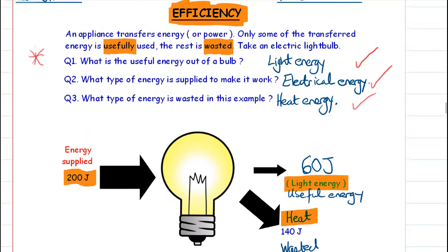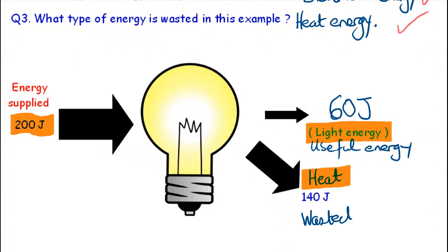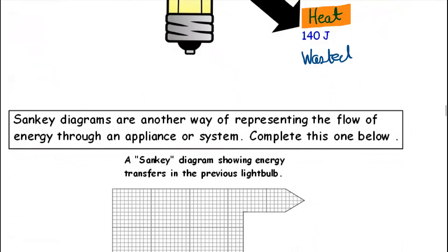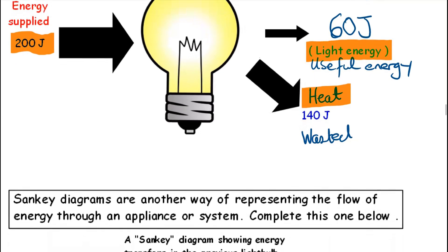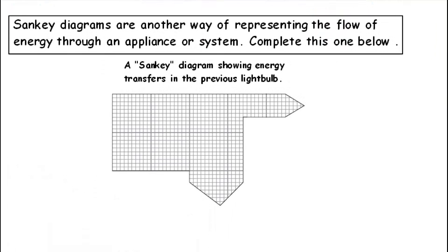Next, we're going to learn how we can represent that flow of energy using what we call a Sankey diagram. Again, you would have met this at Key Stage 3. Complete the one below — Mr. Reddy has represented the different ratios of energy change for you, but you need to label the Sankey diagram based upon the energy supply, the useful energy, and the wasted energy. Before you do that, we're going to watch a quick video to recap on how to draw a Sankey diagram.